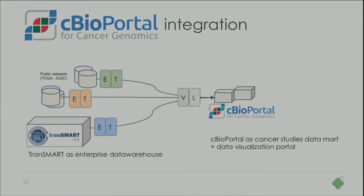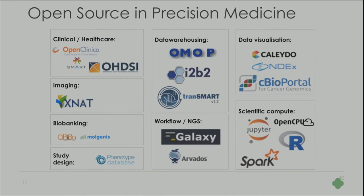It goes something like this: you have Transmart as a data warehouse and cBioPortal as a visualization portal or data mart, whatever you want to call it.